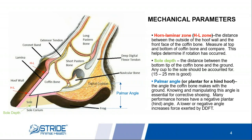Another extremely important mechanical parameter is sole depth, simply measured from the bottom of the tip of the coffin bone to the ground level. Horses with poor hoof quality tend to be tender-footed because sole depth is too narrow. 15 to 25 millimeters of sole depth is good. If you get down to only five or six millimeters of sole depth, you're going to have a horse that's very tender-footed — it would be like you walking across a stone parking lot in bare feet.